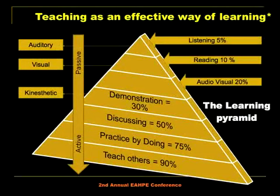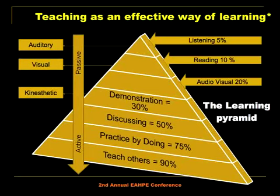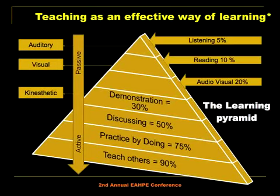I wanted us to look at teaching as an effective way of learning using the learning pyramid. From top to bottom, we have auditory and visual at the top, then demonstrations, discussions, and practices lower down. Learning and retention increases as you go downwards — the more you participate, the more you remember. When students demonstrate to others they retain 30%, but when they discuss, practice, and teach others, they can retain up to 90%.